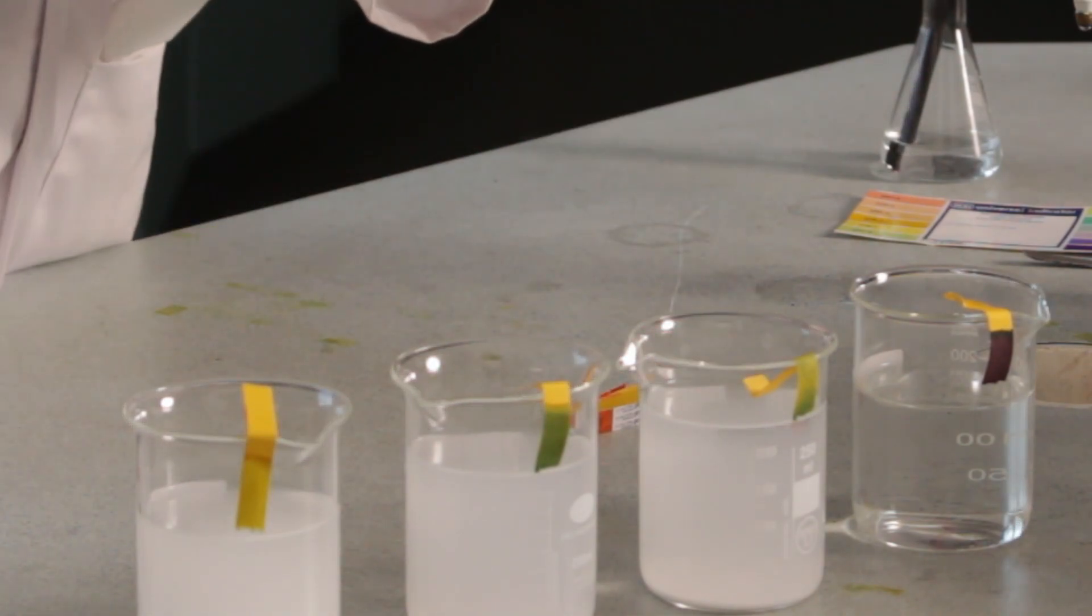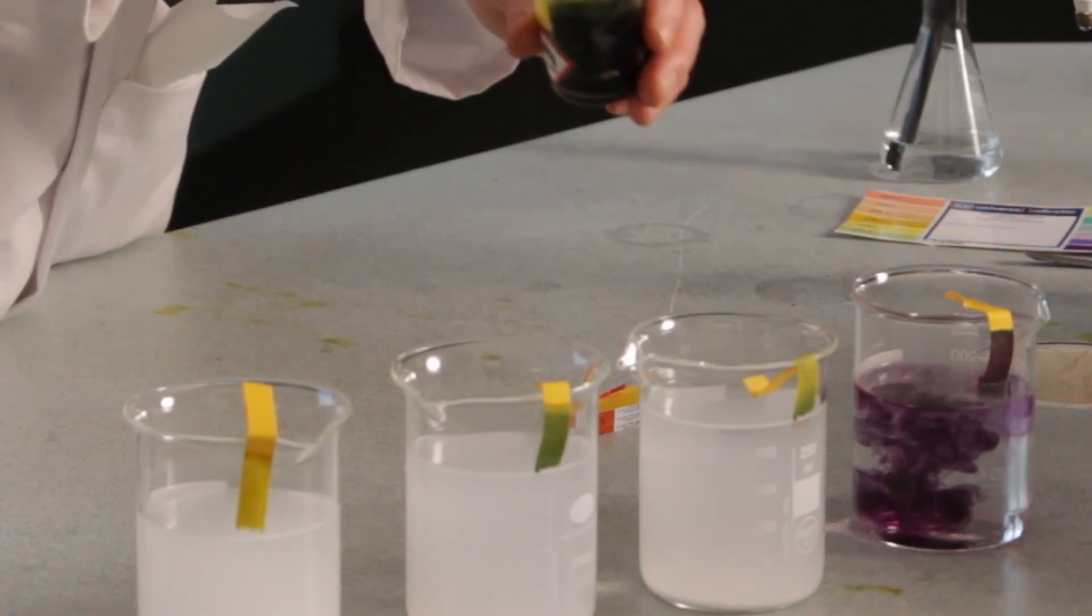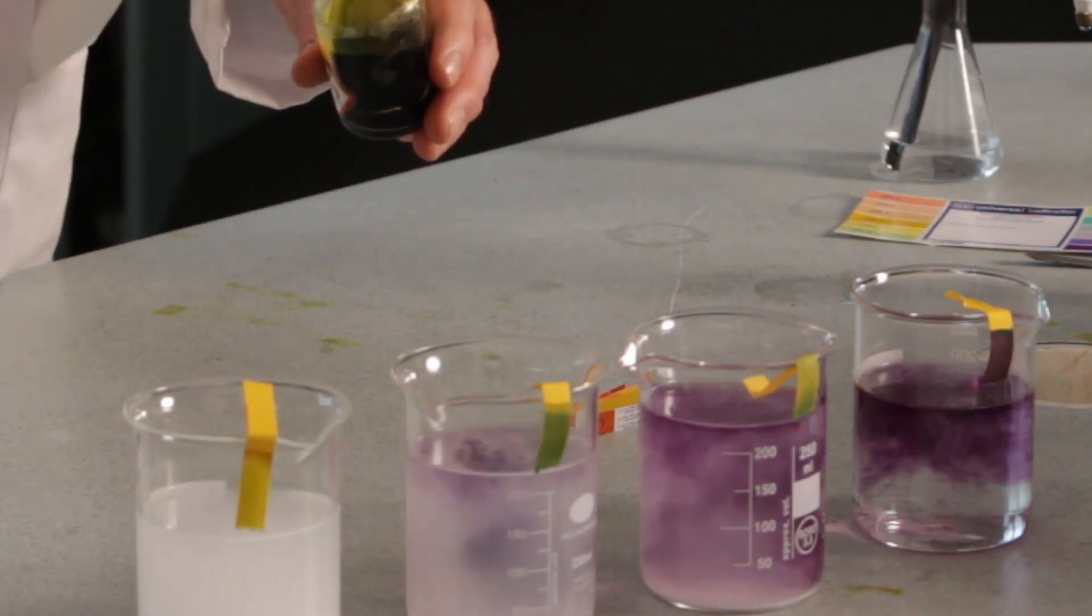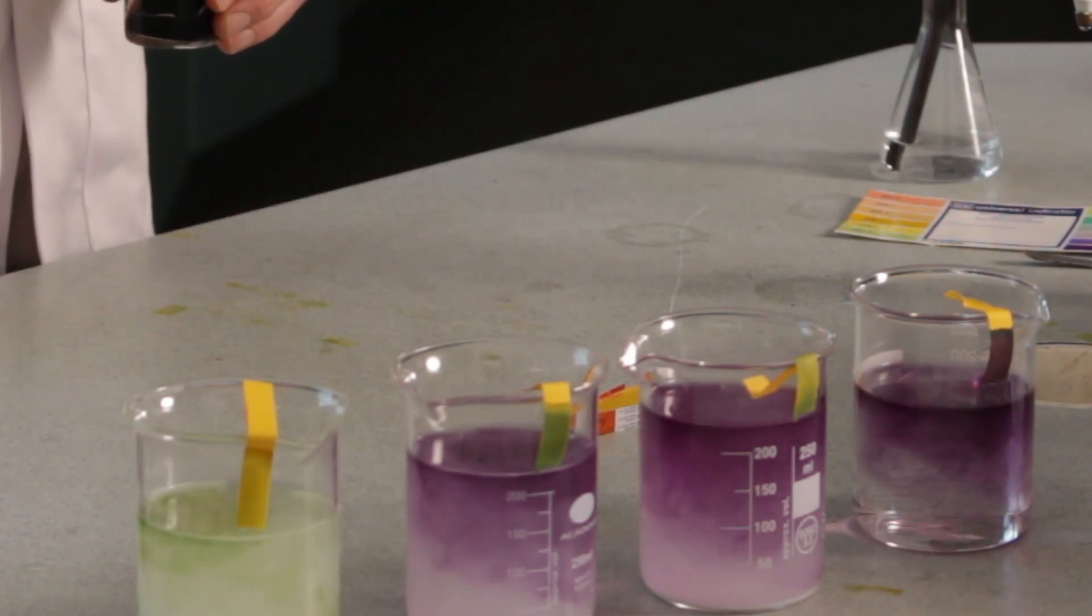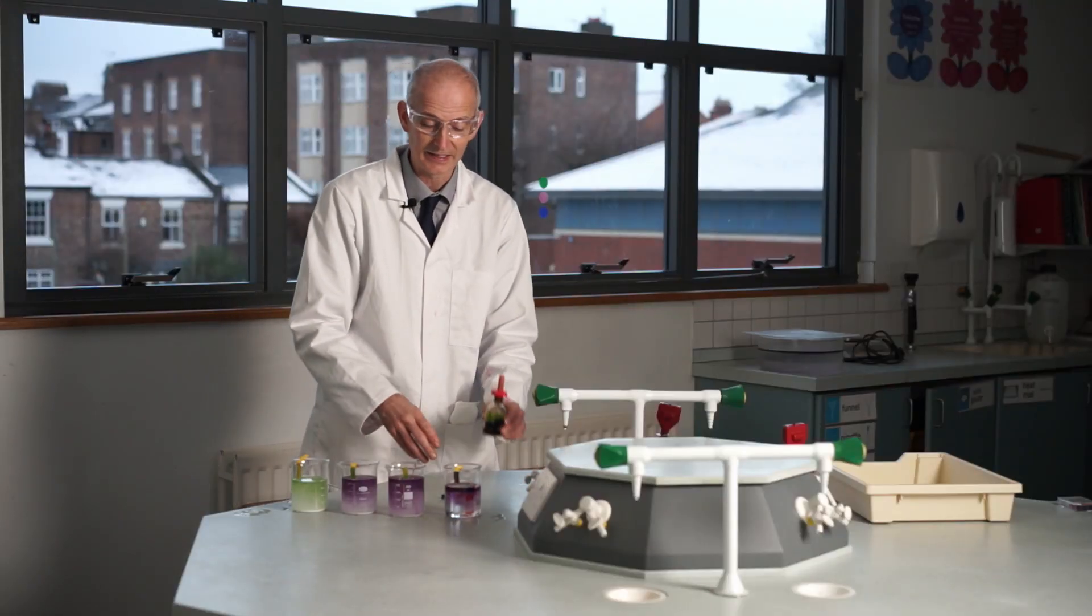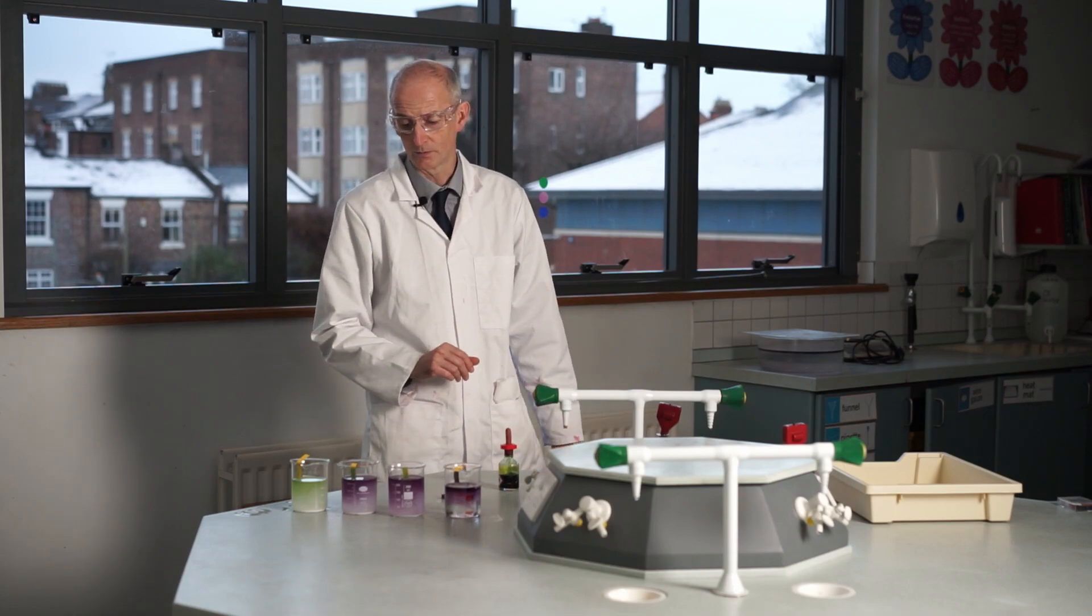If we add a bit of this liquid, see what happens here. Deep purple. Quite purple. Quite purple. Green. So, hard to tell the difference with this indicator between the three different alkaline ones, but the neutral one showing up clearly is being still green.